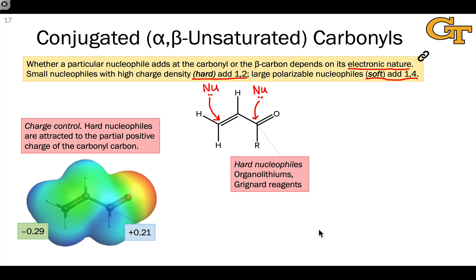The reactivity of these highly charged compounds is driven by what we might call charge control. These hard nucleophiles are attracted to the partial positive charge of the carbonyl carbon. If we look at the partial charges in a typical unsaturated carbonyl compound, what we see is that the partially positive carbon is the carbonyl carbon, and in fact, the beta carbon is often partially negative. Hard nucleophiles like RLi and RMgX are attracted to the partial positive charge of the carbonyl carbon and react there. This is an example of charge control.